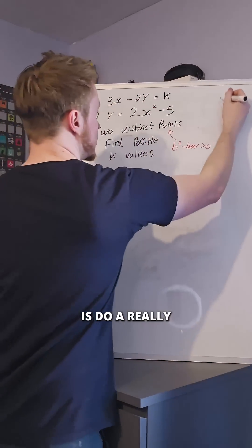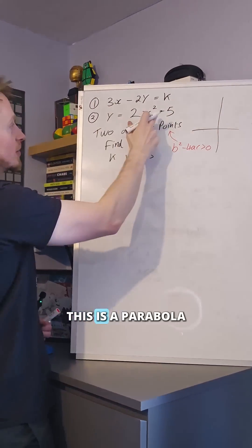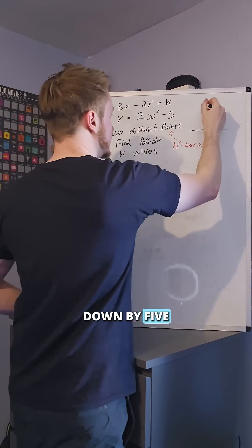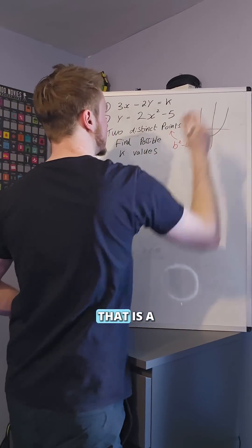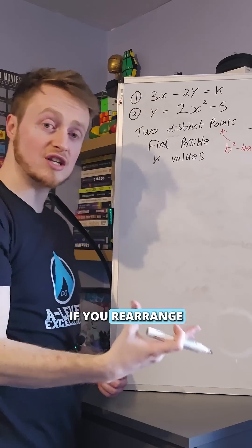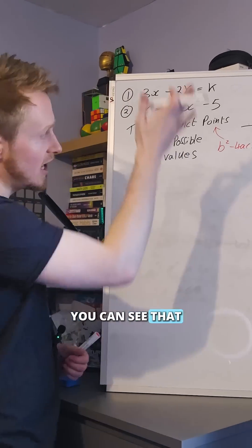First thing I would do now is do a really quick little sketch. This is a parabola — it's been moved down by five, it's a translation. That is a straight line graph. If we rearrange it and make y the subject, you can see that.